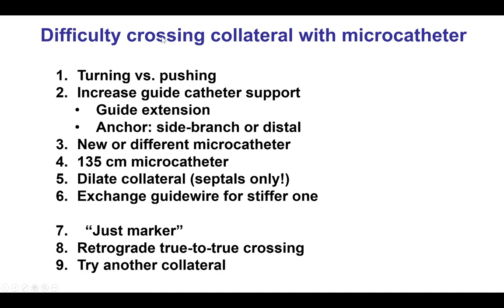Here are some steps one can take to overcome this challenge. The first is to try different manipulations — for example, pushing the microcatheter or rotating it. Some microcatheters can be rotated, like the Turnpike and the Corsair, whereas others like the Caravel and Finecross are much harder to rotate and should simply be advanced by pushing. Another option is to increase support, most commonly with a guide catheter extension.